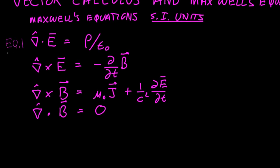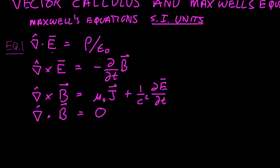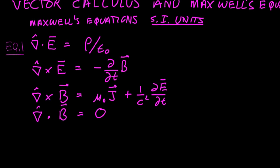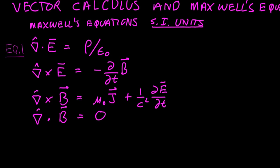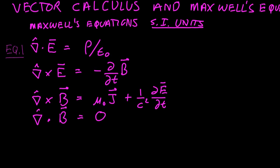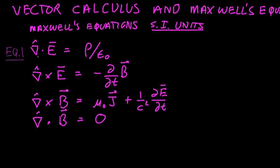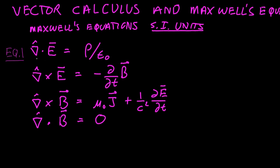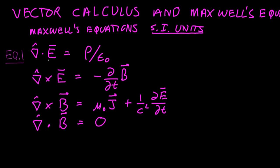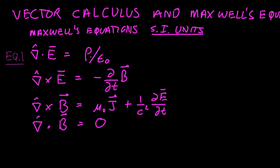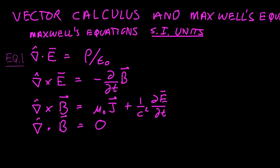We say that the divergence of the electric field — and we'll talk about this differential operator del, it's a vector differential operator. In classical vector calculus, this is called the divergence of the electric field, equal to the charge density divided by a constant epsilon zero.